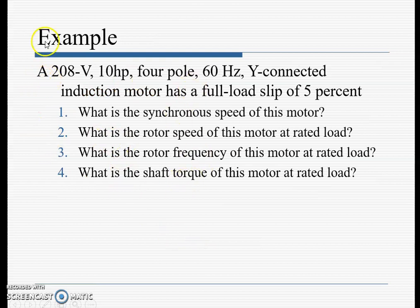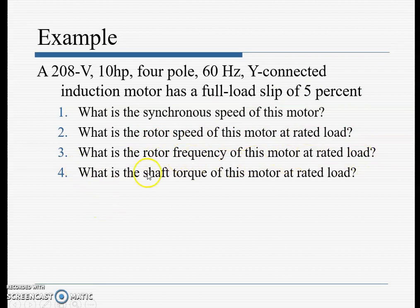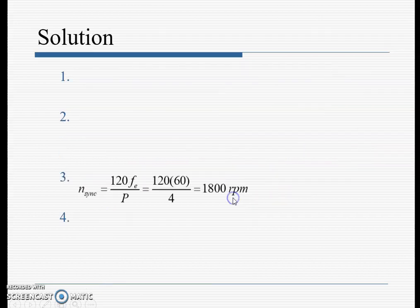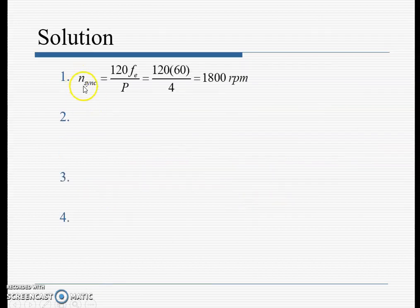Let's do an example. A 200-volt, 10-horsepower, 4-pole, 60 Hz, star-connected induction motor has a full-load slip of 5%. Calculate: the synchronous speed, the rotor speed at rated load, the rotor frequency at rated load, and the shaft torque at rated load. Starting with synchronous speed: n_s = 120F / P = 120 × 60 / 4 = 1800 rpm.